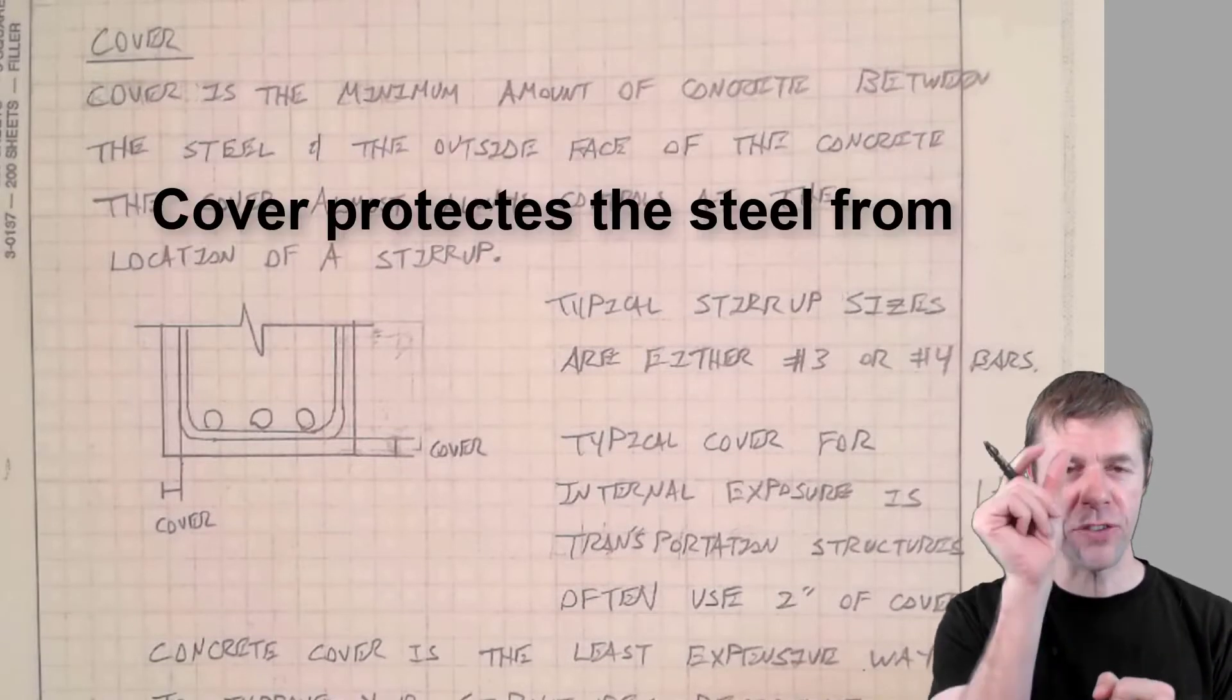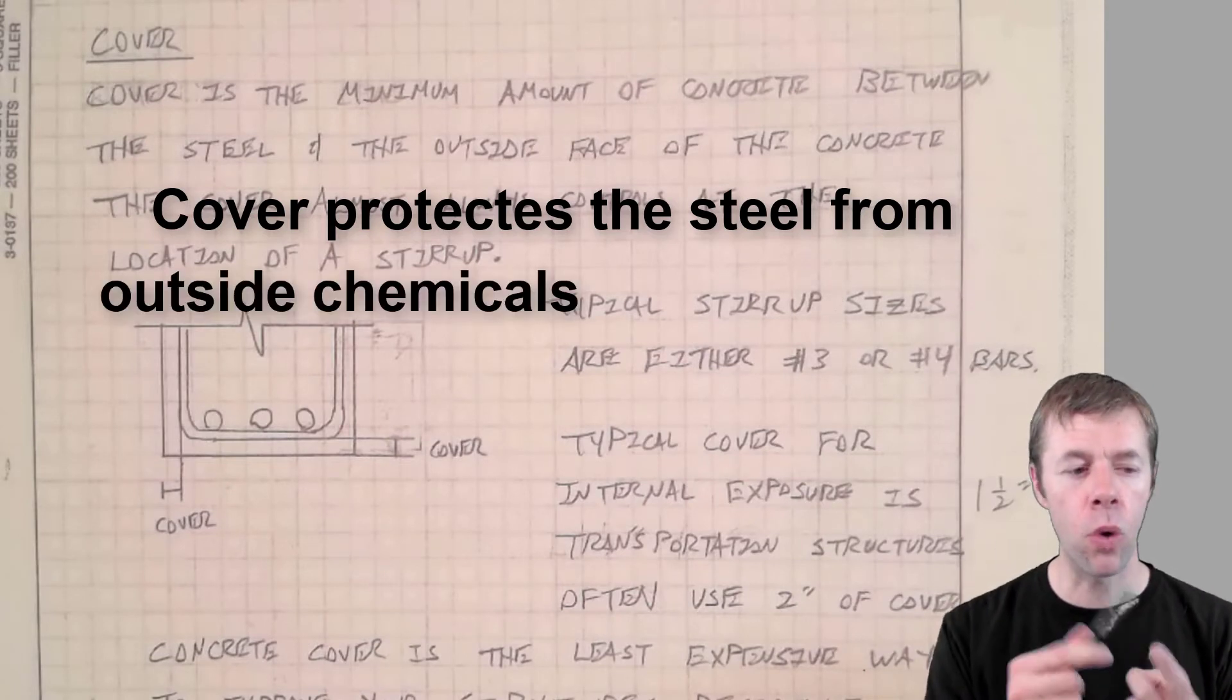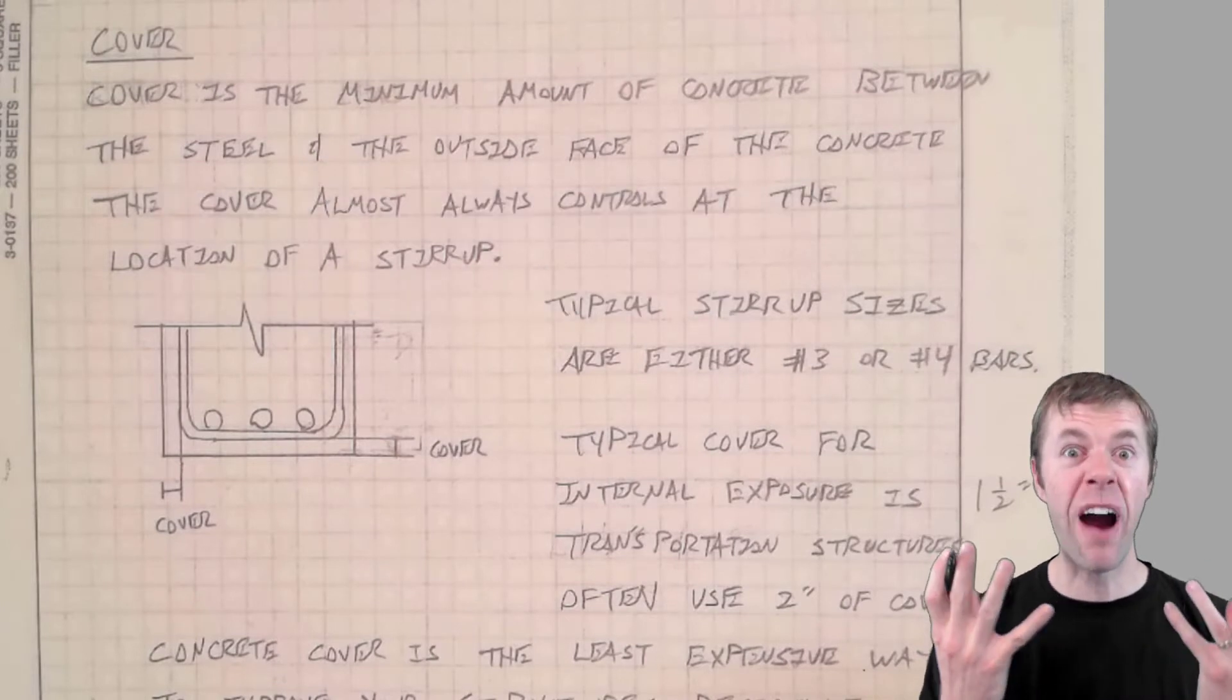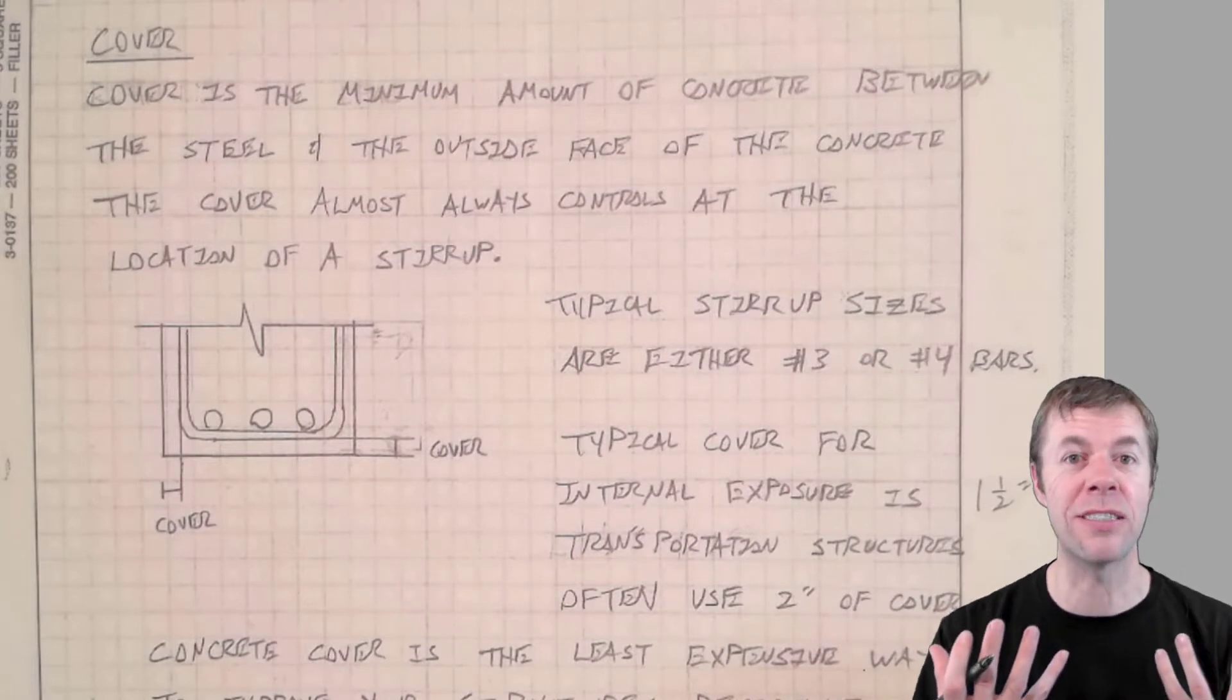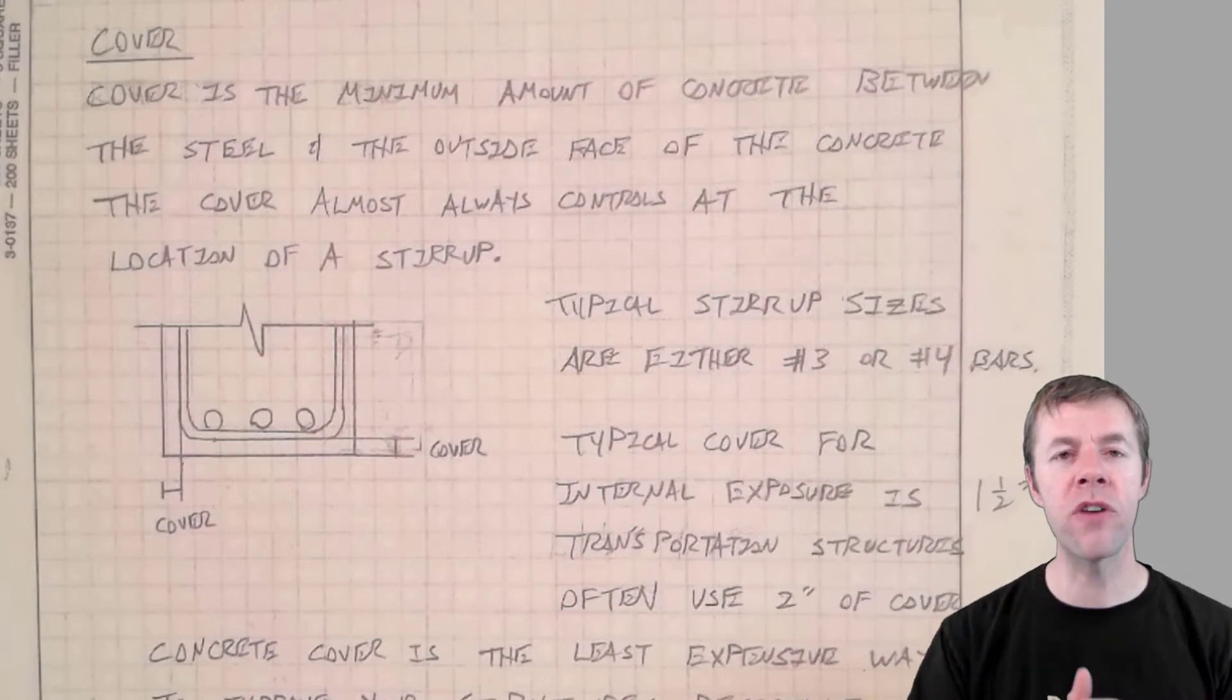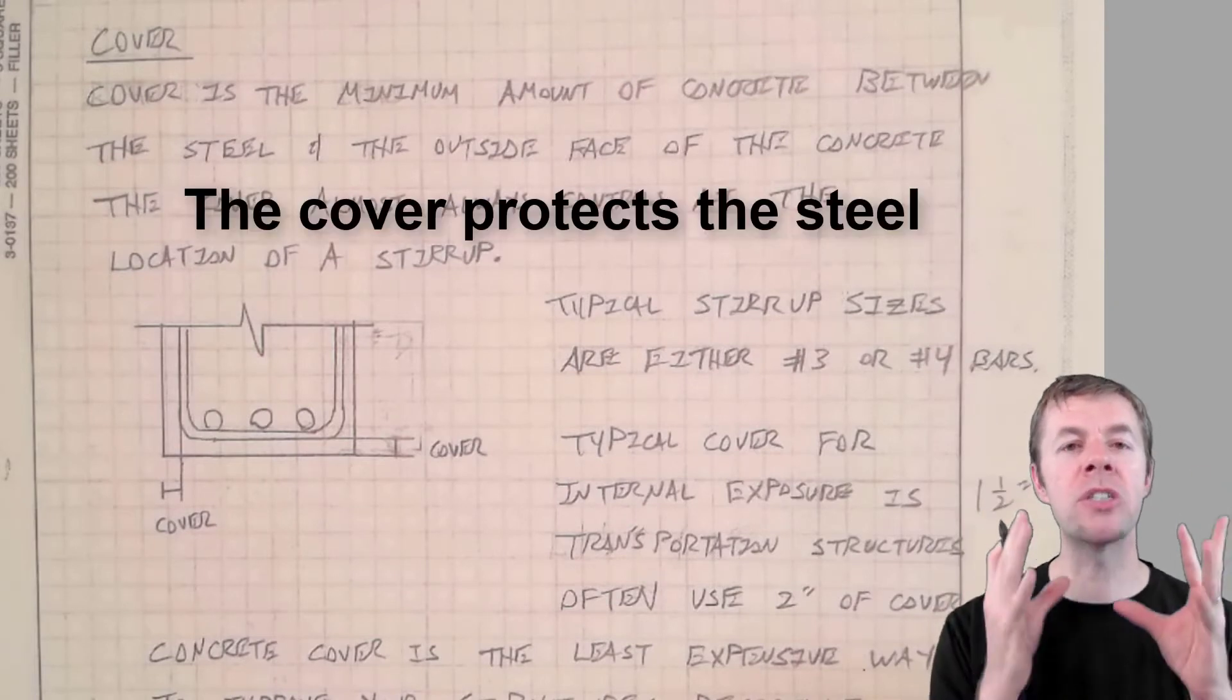This cover, this outside skin, is what protects the concrete from outside chemicals or from fire. If you have flames and fire get to the steel, it'll melt it. It actually causes it to lose its strength and lose its stiffness. That's not good. That's one of the strengths of reinforced concrete is that it has cover. It has concrete to protect the steel.